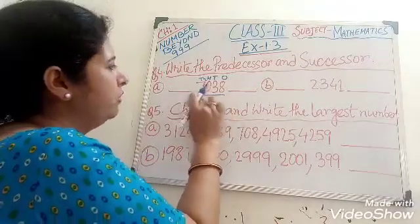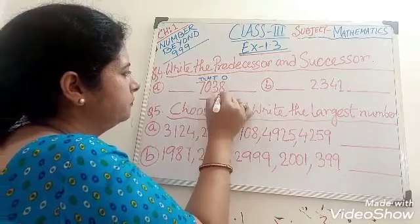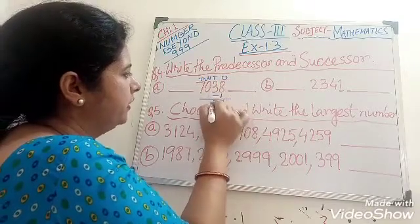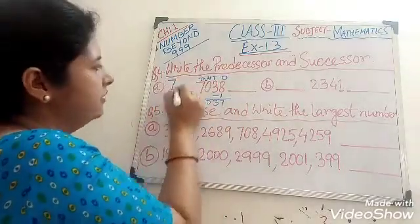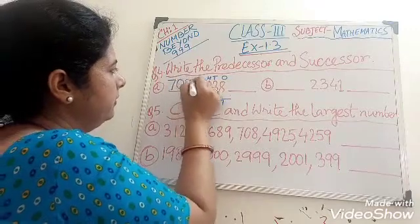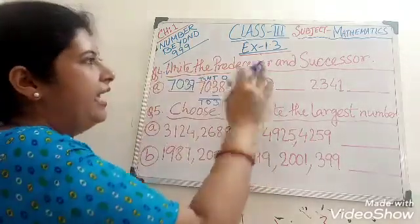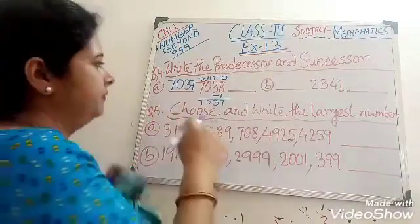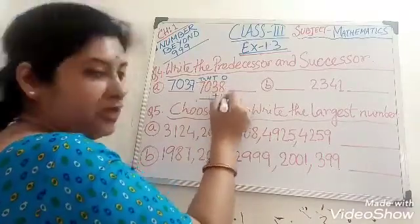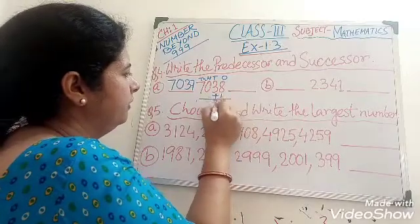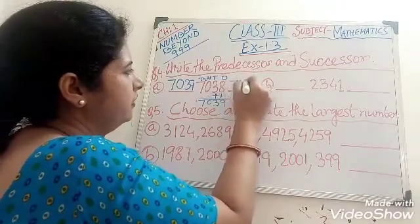We are going to subtract 1 from this number. So our predecessor number is 7,037. And in case of successor, add 1. So our number is 8 plus 1 equals 9: the answer is 7,039. Clear?